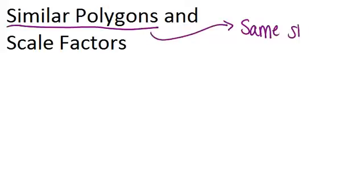First, let's talk about what makes two polygons similar. Two polygons are similar if they are the same shape, but not necessarily the same size. That's the basic idea.